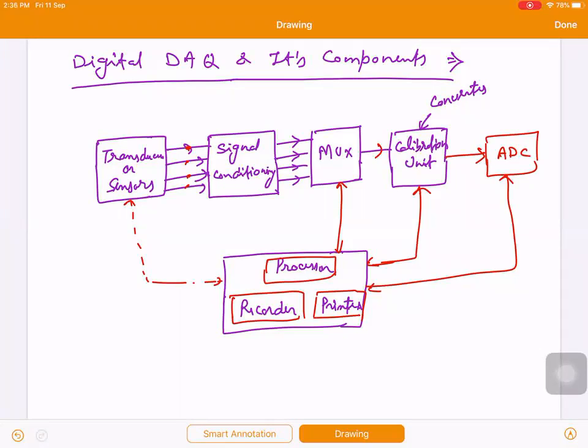Next, multiplexer. Mux, sometimes we also use demultiplexer. Multiple input, single output. Demultiplexer: single input, multiple output. We use this multiplexer for the selection of components.